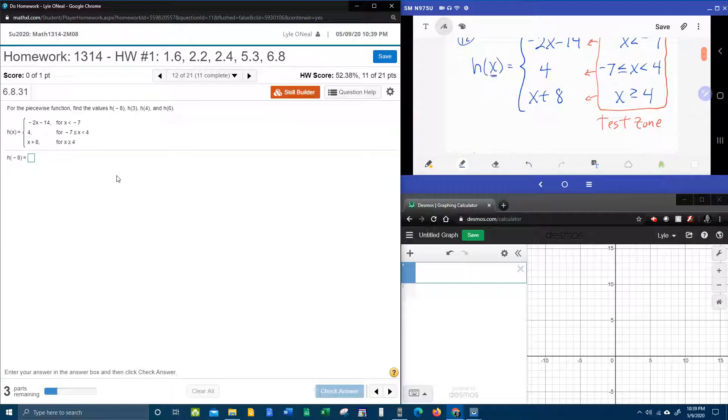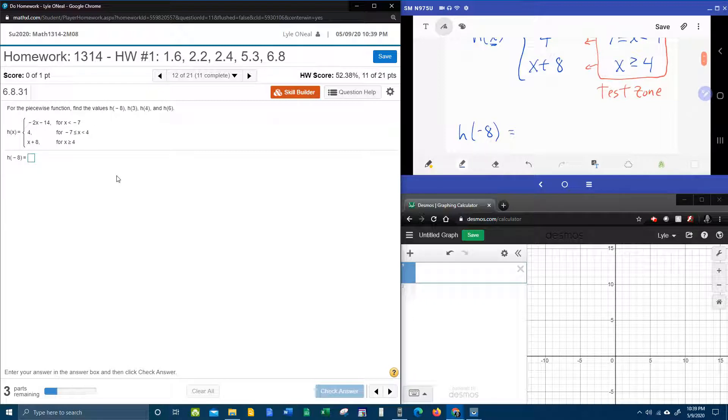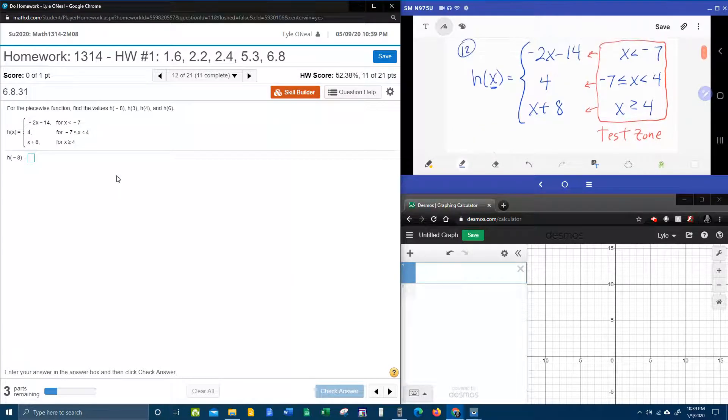See, from up here, h of x, whatever's in the parentheses is an x, and we're going to take this negative eight to the test zone and we're going to test it to see where to put it. And like the movie Highlander, there can be only one answer. So, negative eight. Is negative eight less than negative seven? Well yes, that is true, and so this is the piece that we do. Get it? Wherever it's true, that's the piece that you do.